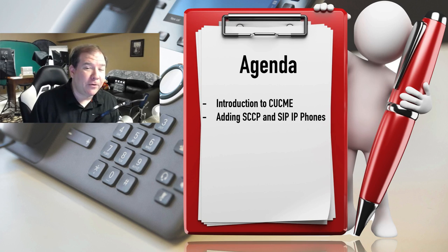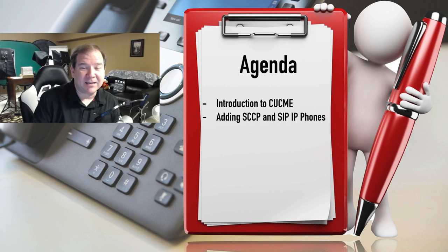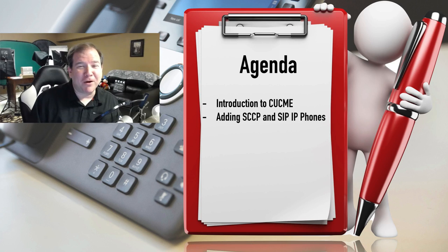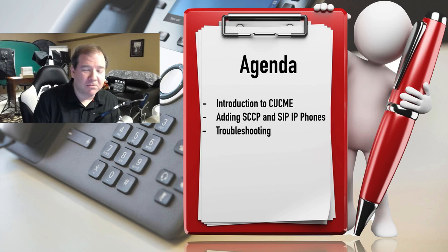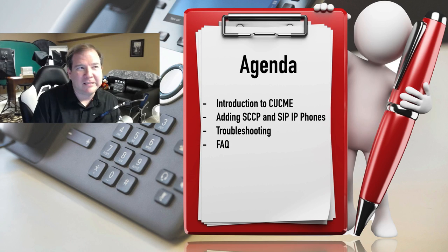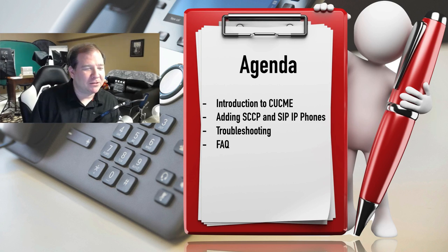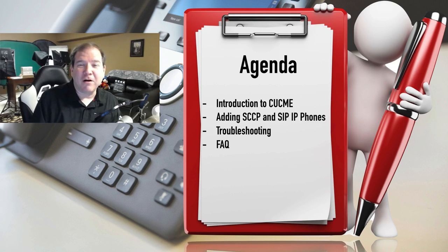I want to show you how to add a skinny phone - I've got a 7965 here in the studio. And a SIP phone - I've got a 9971 that supports video. We'll show you how to add that to our Communications Manager Express router. Since troubleshooting is a fact of life in networking, we'll also talk about common troubleshooting issues with Cisco Unified Communications Manager Express.